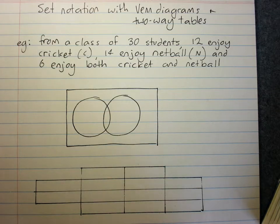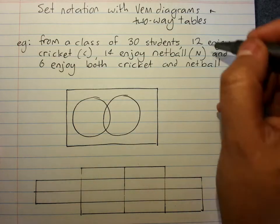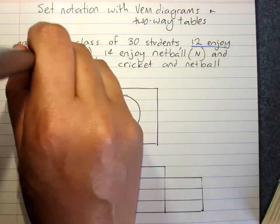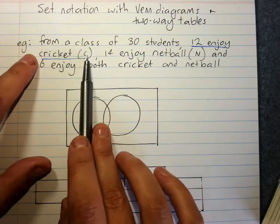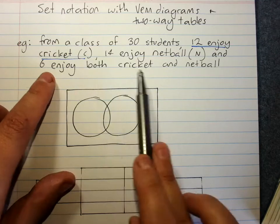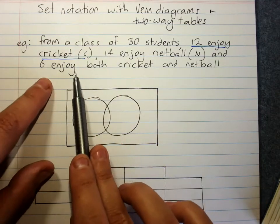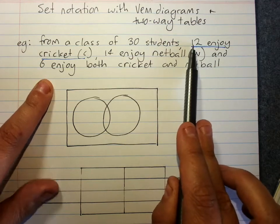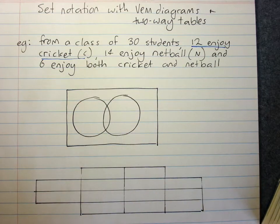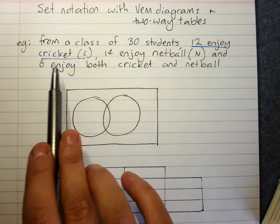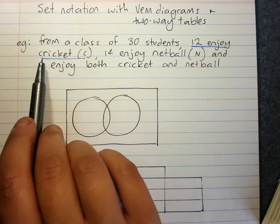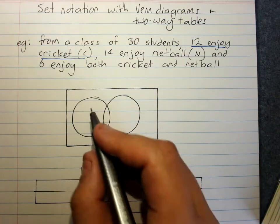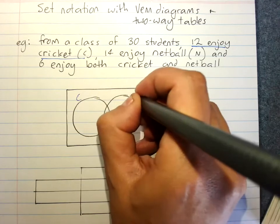There are some aspects to remember. When we say 12 students enjoy cricket, that is the total — 12 students like cricket in total. It's not that 12 put their hand up because they only like cricket with some more who like both. This 6 is part of this 12. The total number of students who enjoy cricket is 12. If they meant only cricket, they would have to say '12 enjoy cricket only.' So 12 enjoy cricket is the total. We label our Venn diagrams C and N for cricket and netball.